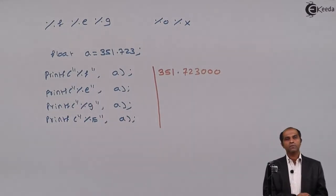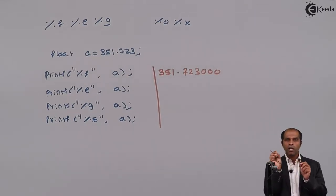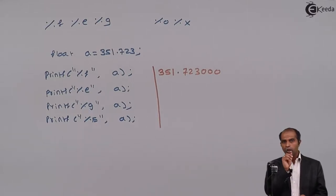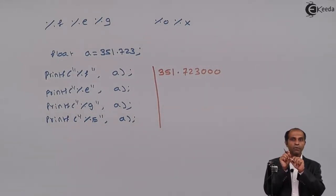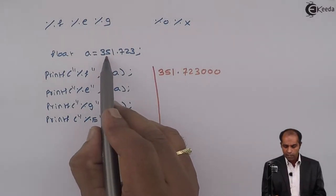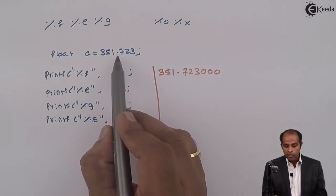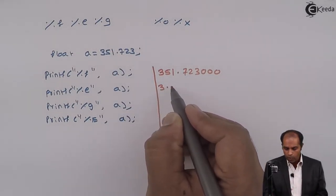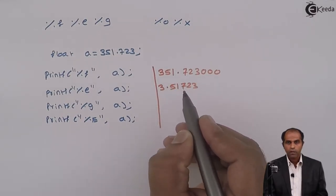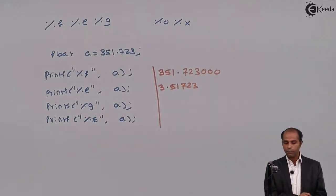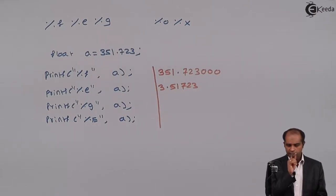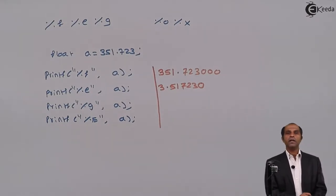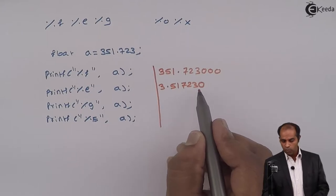Now, what does the %e specifier do with variable a? The %e specifier aligns the decimal point by moving it left or right, always ensuring there is one non-zero digit before the decimal point. For 351.723, the decimal point moves left by two positions, giving 3.51723. Since there must be six fractional digits, one additional zero is added, resulting in 3.517230.